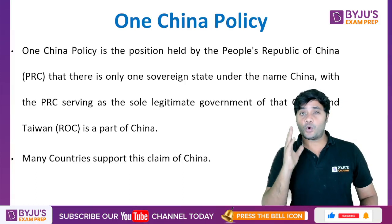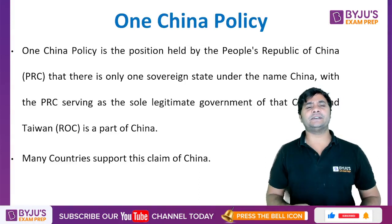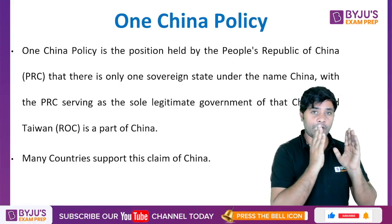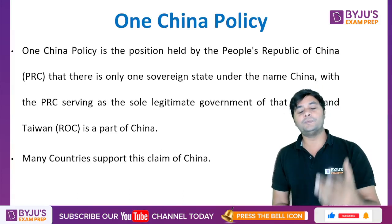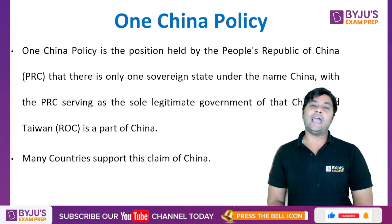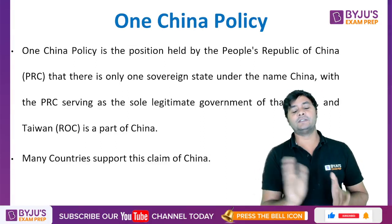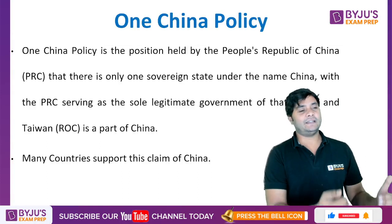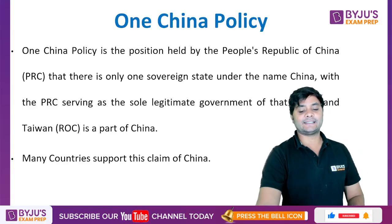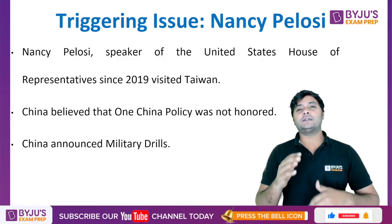Many countries support China's claim and do not recognize Taiwan; only about a dozen countries acknowledge Taiwan as a separate state. India also follows the One China Policy, hoping that in return China will recognize India's claims over disputed territories — including PoK and areas along the Line of Control — and follow a one-India policy.